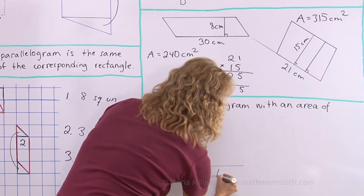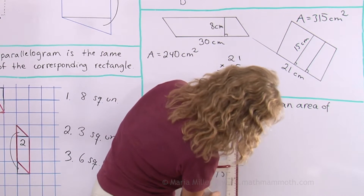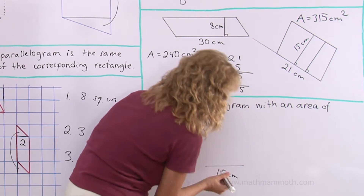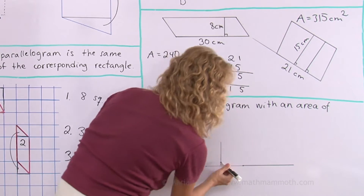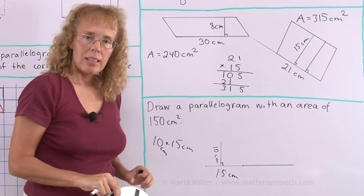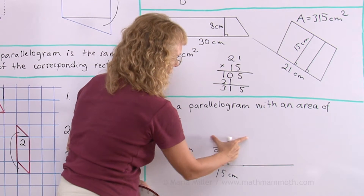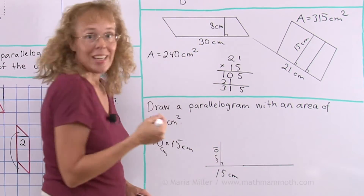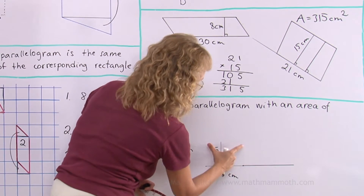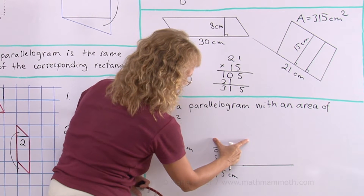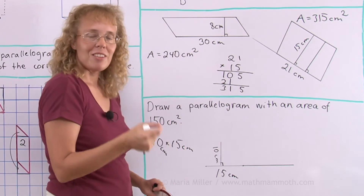So I will draw a base that is 15 centimeters and then draw the altitude 10 centimeters up — it has to be a perpendicular line. I need to continue the base to be able to use my protractor. This is now 10 centimeters. The other opposite side to the base will be 15 centimeters. I can now choose how slanted my parallelogram will be. All of those possibilities will have the height of 10 centimeters.